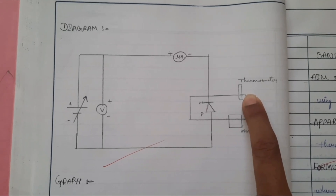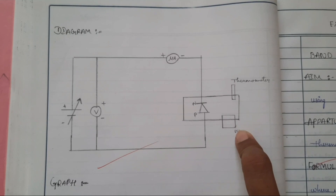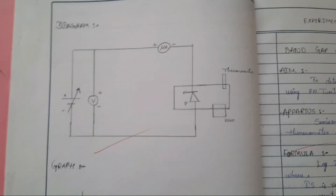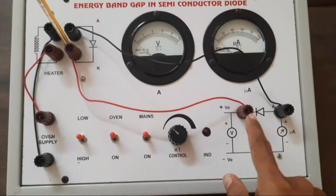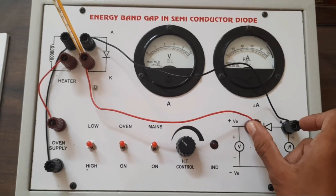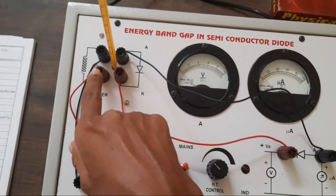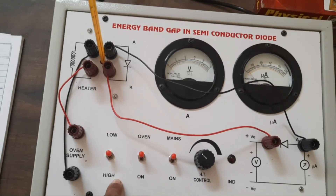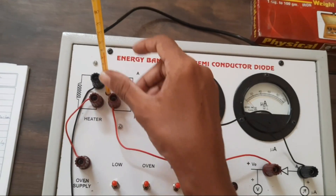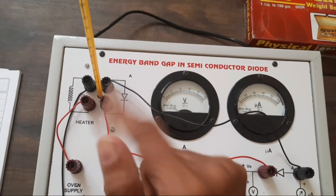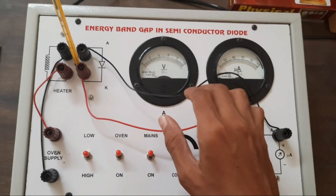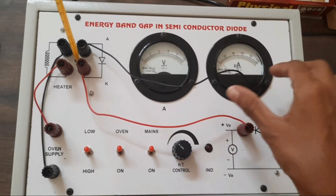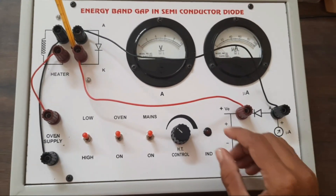The PN junction diode is connected to the oven, and we use a thermometer to measure the temperature. When we heat the diode, its temperature rises, which we can measure with the thermometer. The diode has been connected across the heater or oven. There is a supply to keep at low or high to heat the oven. The voltmeter is connected across one end of the diode, and every connection has already been made.